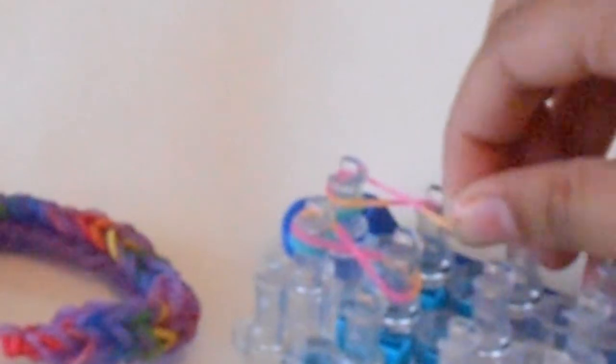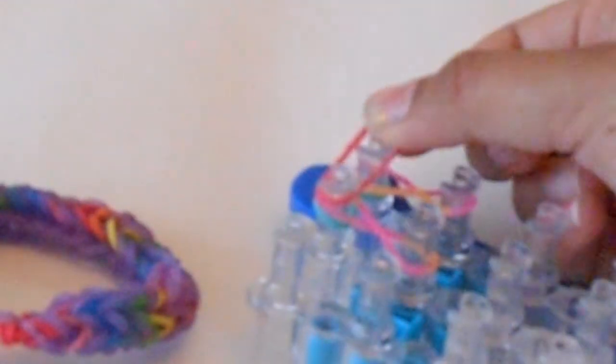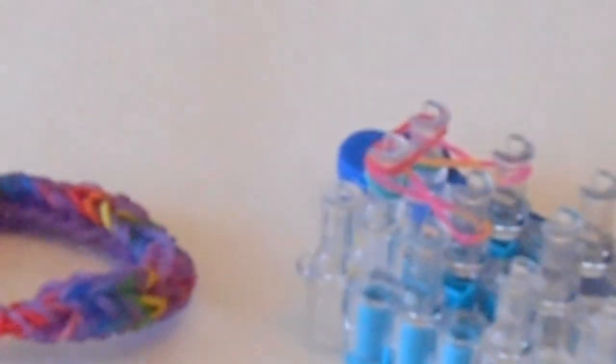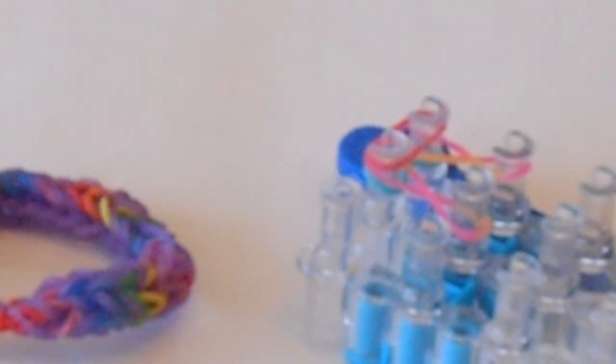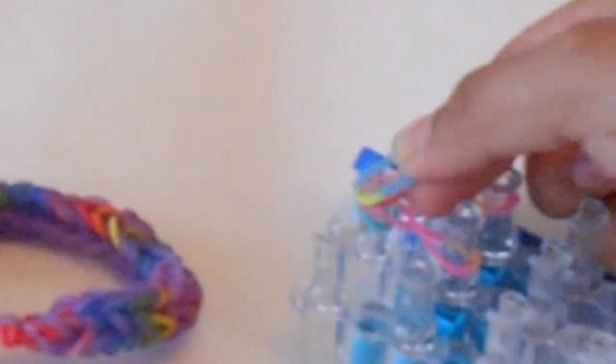And then you're going to take another color rubber band. Yeah I'm taking this pink, and then you're going to place it across two of these pegs. And then take two same rubber bands, I'm using these tie-dyes, and you're gonna place it like this across.